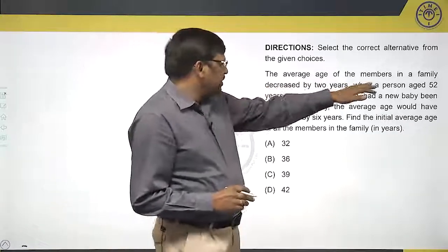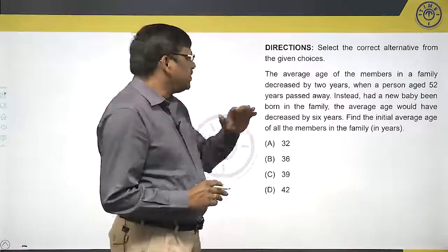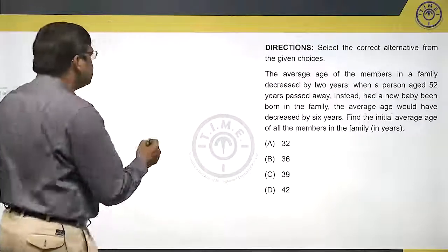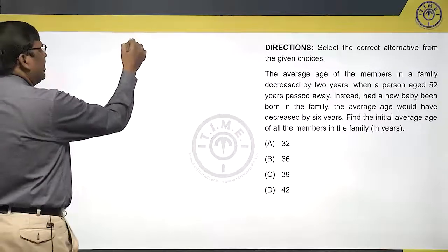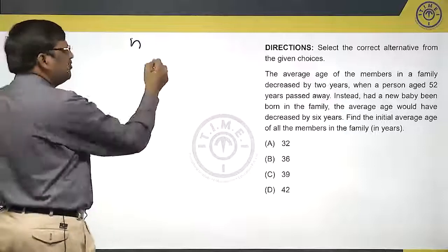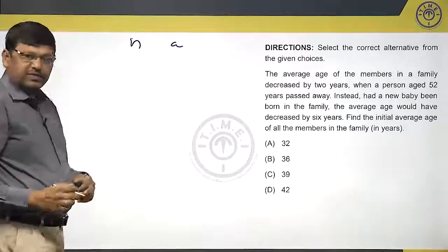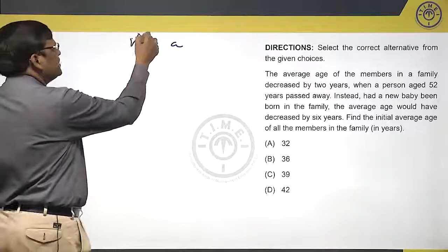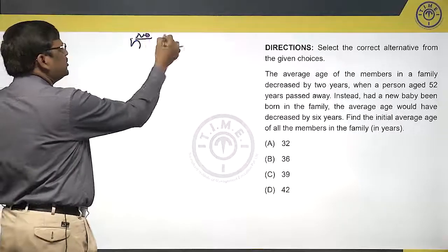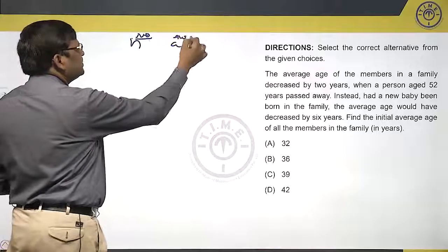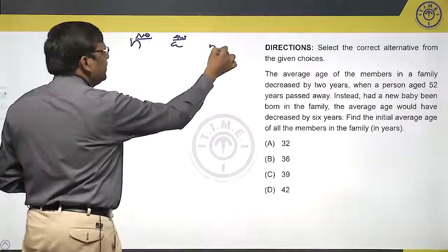The average age of members of a family decreased by 2 years when a person aged 52 years passed away. Let us say originally I have n numbers in the family and their average is a. This is the number of members, this is the average. So what is the sum? Sum will be n a.